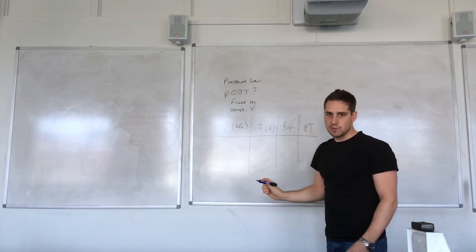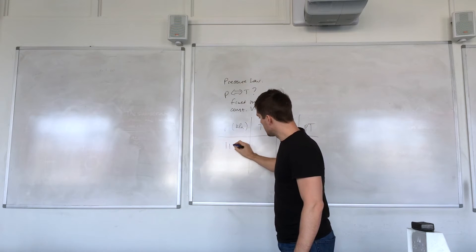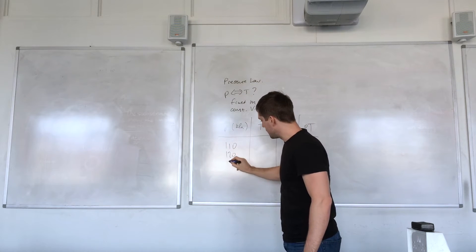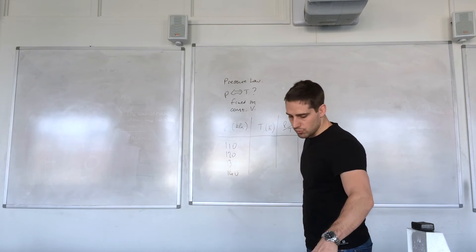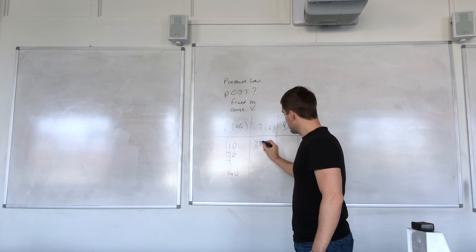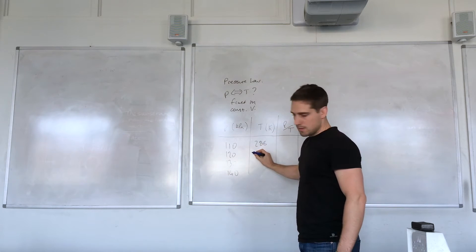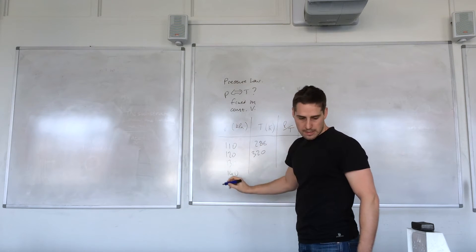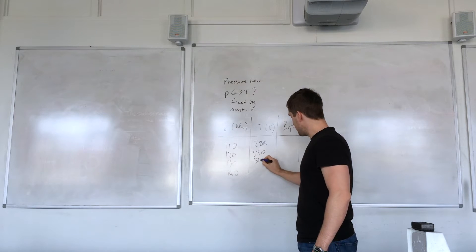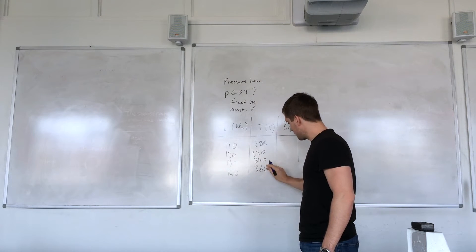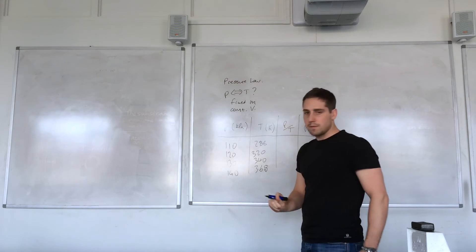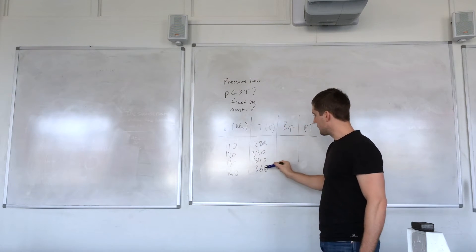So we'll put the data into the table. We've got 110, 120, 130. I just have a few results just to give an example. And the temperature then, 288, 320, 340 and 368. That's our pressure and temperature data there.